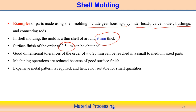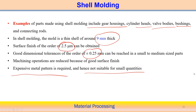Good dimensional tolerances of plus or minus 0.25 mm can be achieved, applicable to small to medium size components. Further machining operations are reduced when following shell mold casting. However, the metal pattern is sometimes expensive, making it unsuitable for very small quantities — large quantities are needed to make this process more economical.